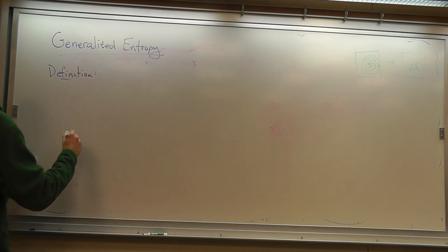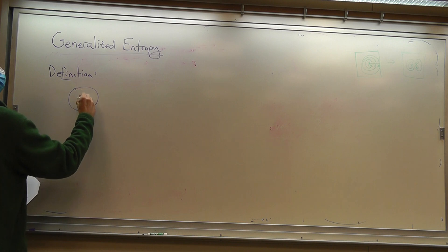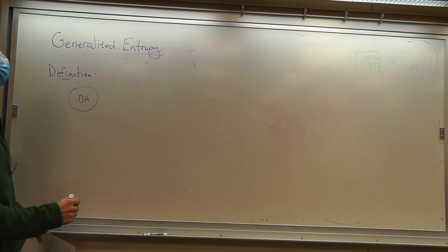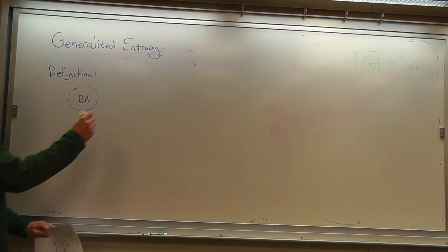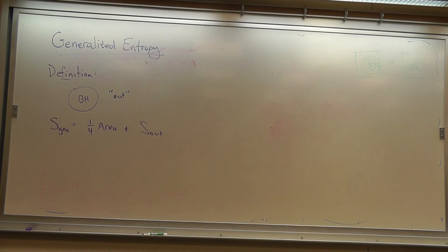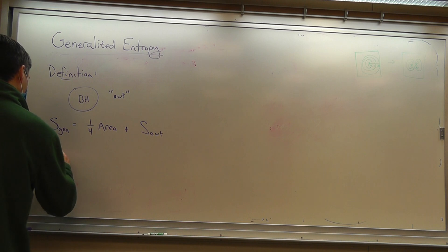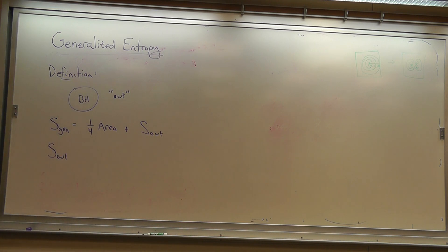So the definition of generalized entropy is in a situation where you have black holes. We're going to think of the region outside the black hole as 'out', and the definition of generalized entropy is S_gen equals one quarter of the area of the black hole plus S_out. This is pretty tricky and subtle — exactly what people mean by generalized entropy, because it kind of changes.